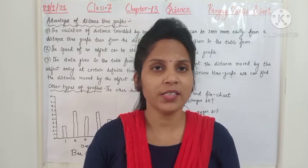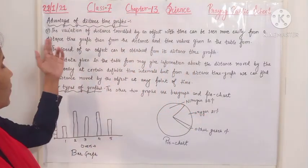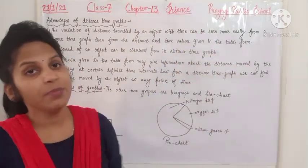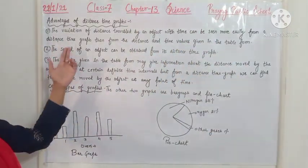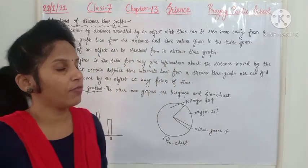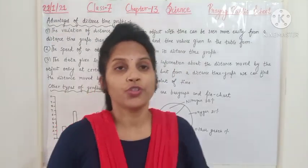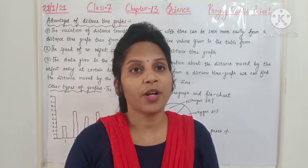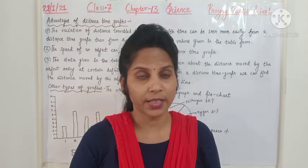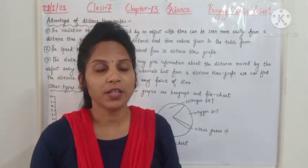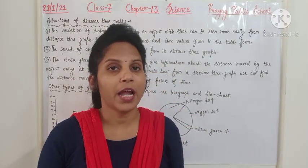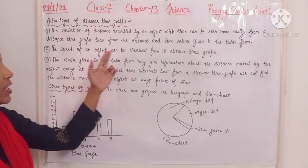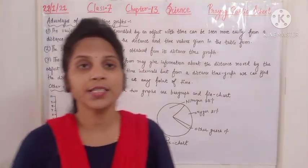Advantages of distance-time graphs: the first advantage is that the variation of distance traveled by an object with time can be seen more easily from a distance-time graph than from distance and time values given in table form. The second advantage is that the speed of an object can be obtained from its distance-time graph.